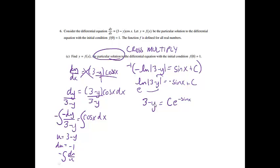And then from here, I'm going to continue to try to solve for y. So I'm going to subtract 3. So I'll get negative y equals c e to the negative sine x minus 3. And then I don't want anything in front of my y. So we're going to multiply by negative 1 again. So I'll get y equals c e to the negative sine x plus 3. And now I just need to use my initial condition to find c. This would be my x and this will be my y.